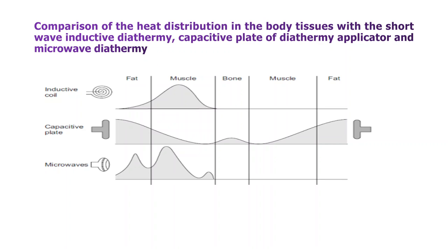We can compare heat distribution in body tissues between shortwave and microwave diathermy. For inductive shortwave diathermy, the heat can penetrate up to fat and muscle. For capacitive shortwave diathermy, it can penetrate up to fat, muscle, bone, and back to muscle — the entire layer can be penetrated. In the case of microwave, it can penetrate up to fat and muscle content only.